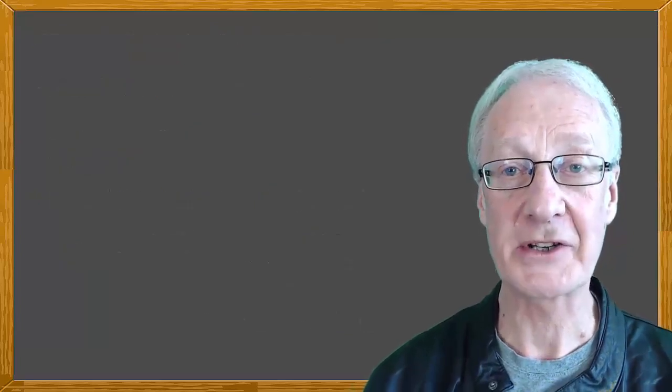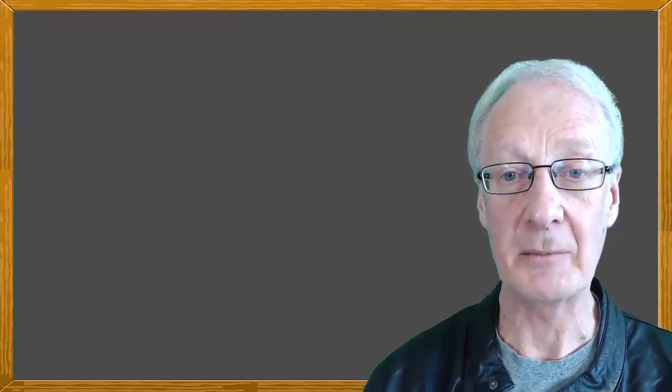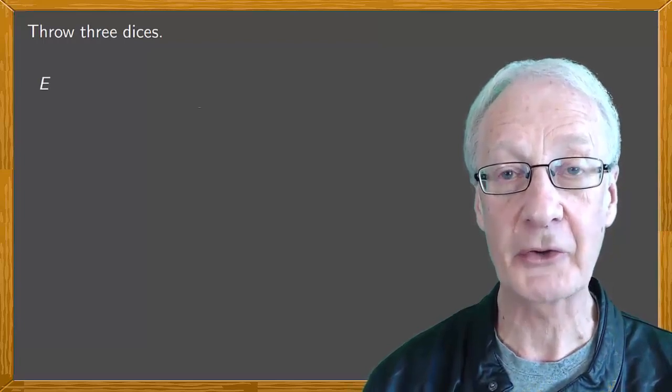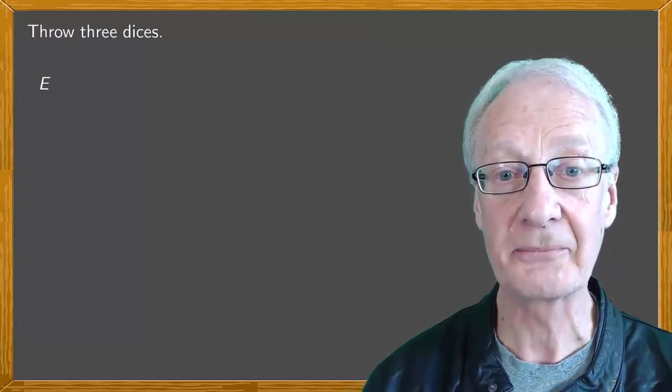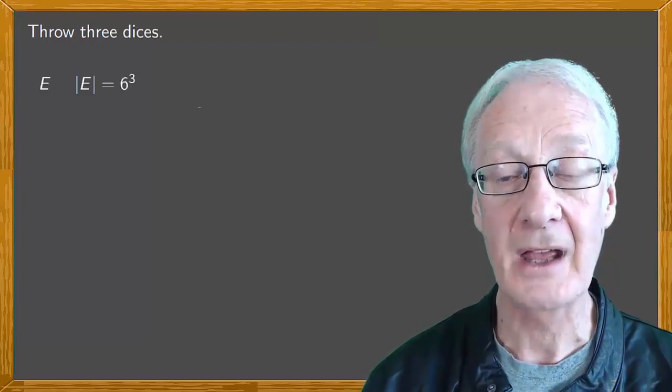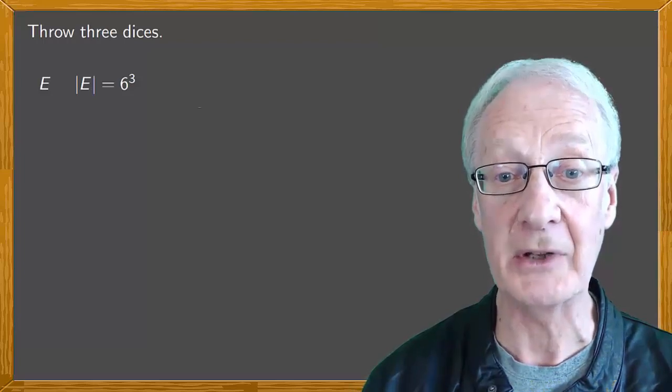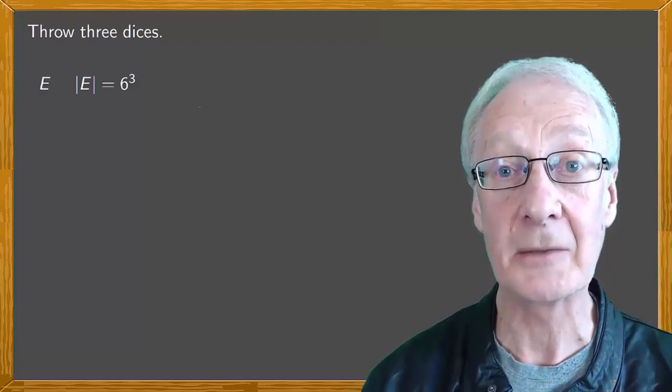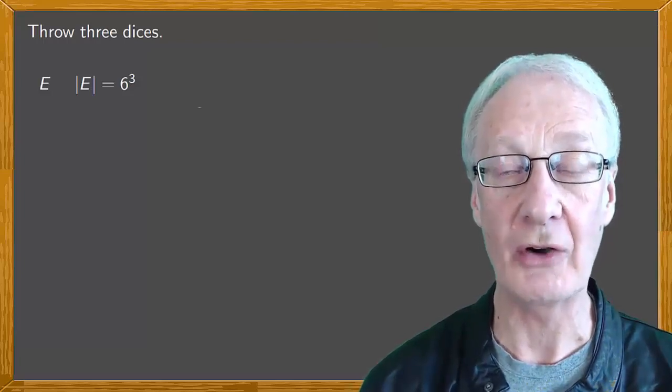Let's look at an experiment to understand conditional probability better. Consider the random experiment of throwing three dice and let E be the sample space. Since we have six possibilities for each die which combine with the results of the other dice, the set of all the results, the cardinal of E, is six cubed. Our random experiment is made up of independent random experiments in each of which the results are equiprobable. Therefore, we can apply the Laplace rule.